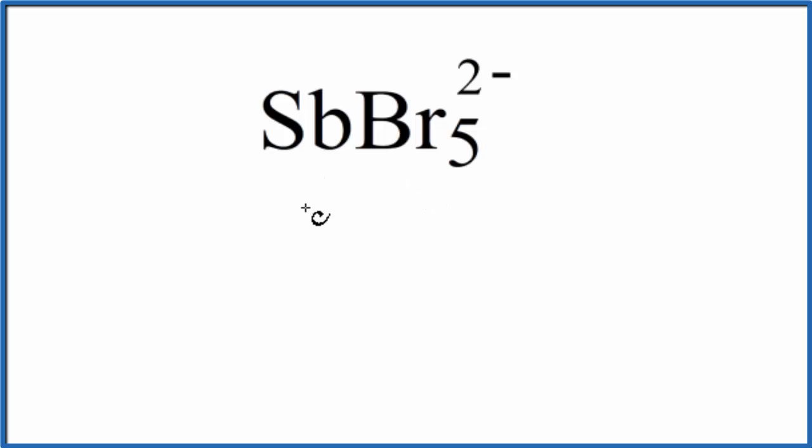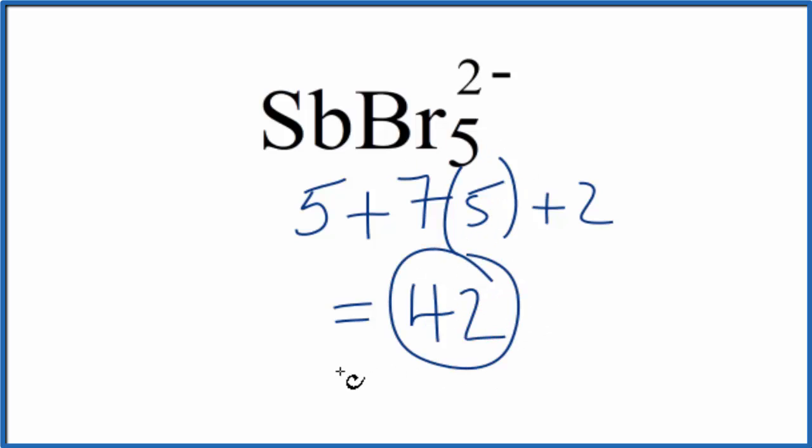Sb is in group 15, sometimes called 5A, so it has 5 valence electrons. Bromine is in group 17, sometimes called 7A, it has 7, and we have 5 bromine atoms. And that 2- up here means we have an additional 2 valence electrons, so we need to add those. It gives us a total of 42 valence electrons for the SbBr5 2- Lewis structure.